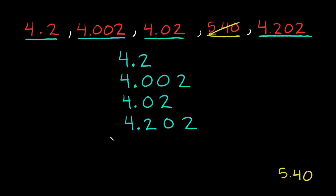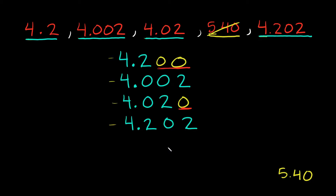Before we start comparing, one other thing you can do: some of these have three decimal places and some only have two or one. Something that's going to help us compare is if they all have three decimal places. To fill in the gaps, you can just write zeros there. The reason you can add these zeros to the end is because adding zeros to the end of a decimal number doesn't change its value — they're called trailing zeros.